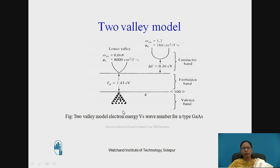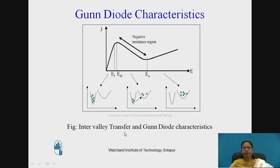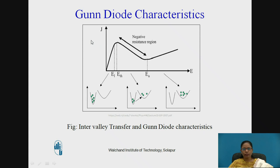Let us understand the characteristics of Gunn Diode along with the two-valley model explanation. This is the Gunn Diode J versus E characteristics, which can also be interpreted as V-I characteristics, since J is proportional to I and E is proportional to V. Initially there is a linear relationship between J and E.